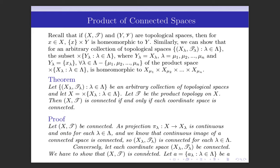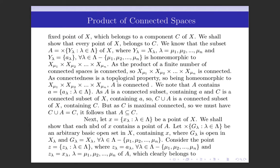Conversely, let each coordinate space (X_λ, T_λ) be connected. Then we have to show that the product space (X, T) is connected. Let A = {a_λ}, λ ∈ Λ, be a fixed point of X which belongs to a component C of X — that is, a maximal connected subset C of X with A belonging to C. We shall show that every point of X belongs to C. If each point of X is in C, then X ⊆ C, but since C ⊆ X, we must have C = X, and since C is connected, X will be connected.